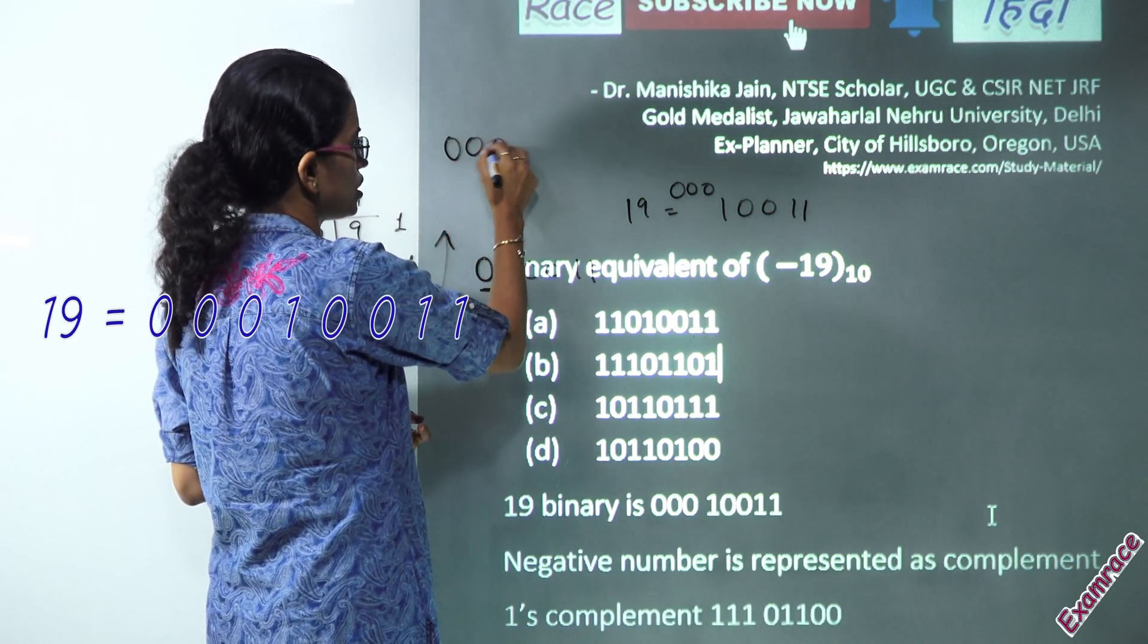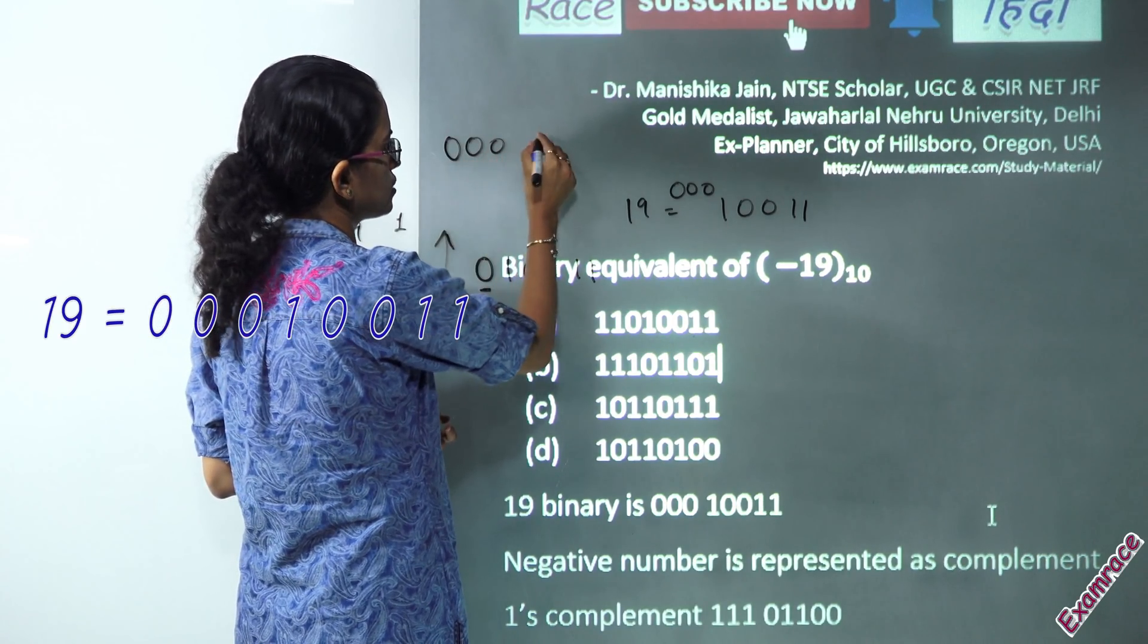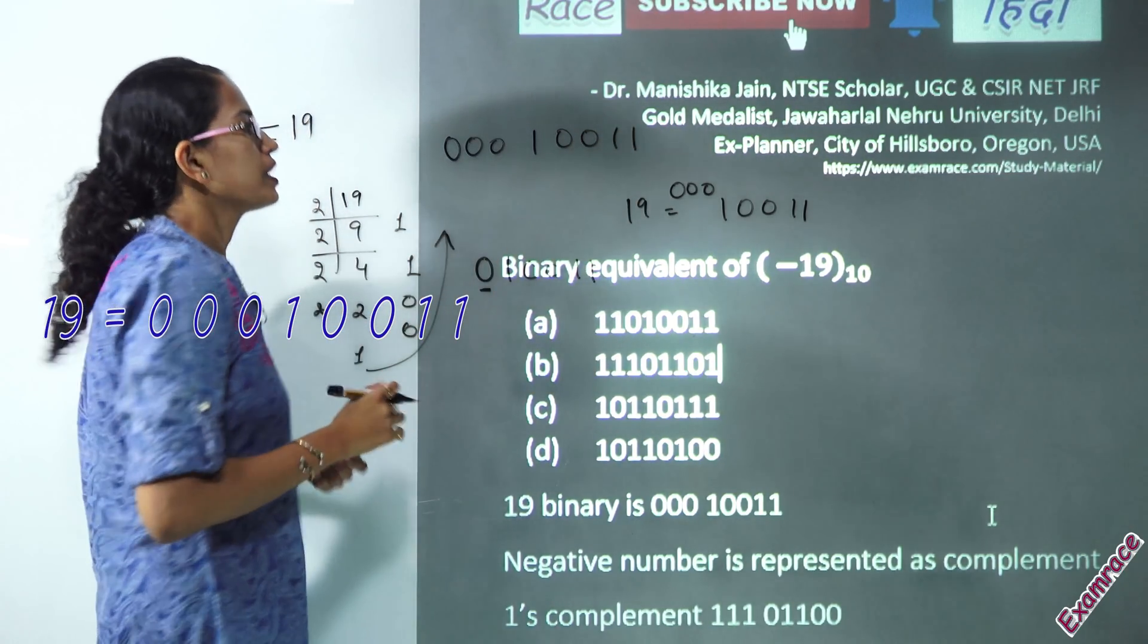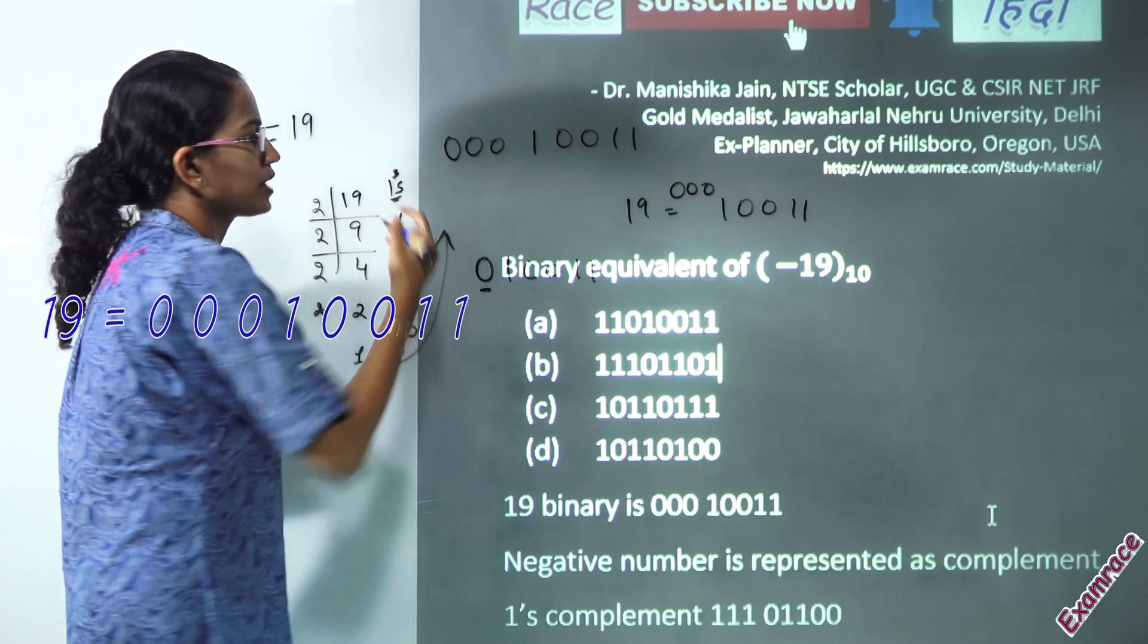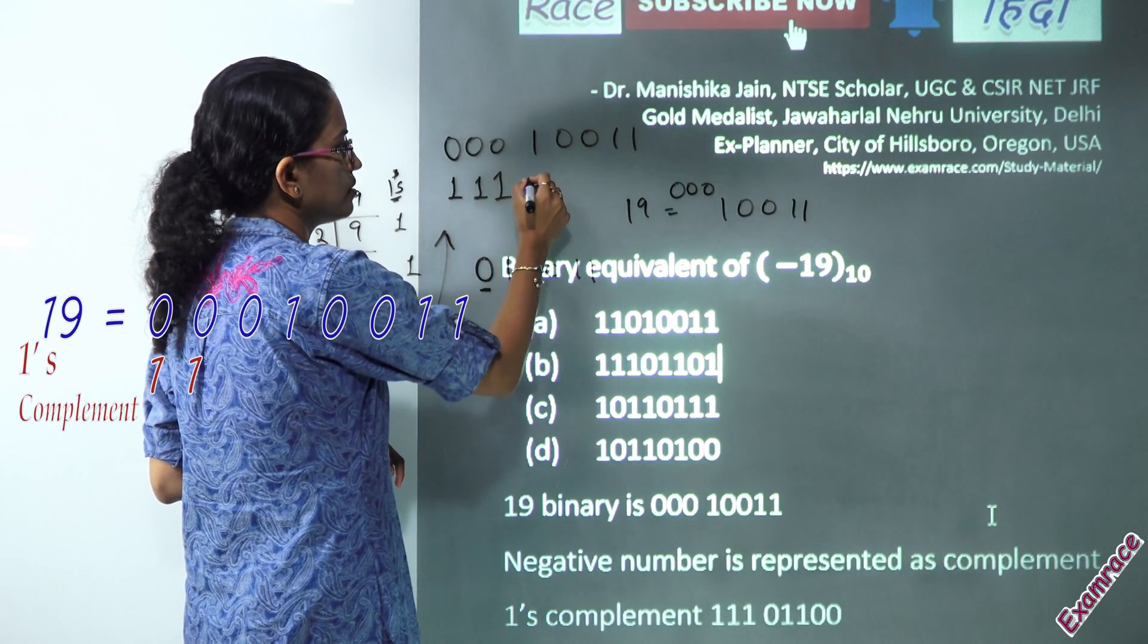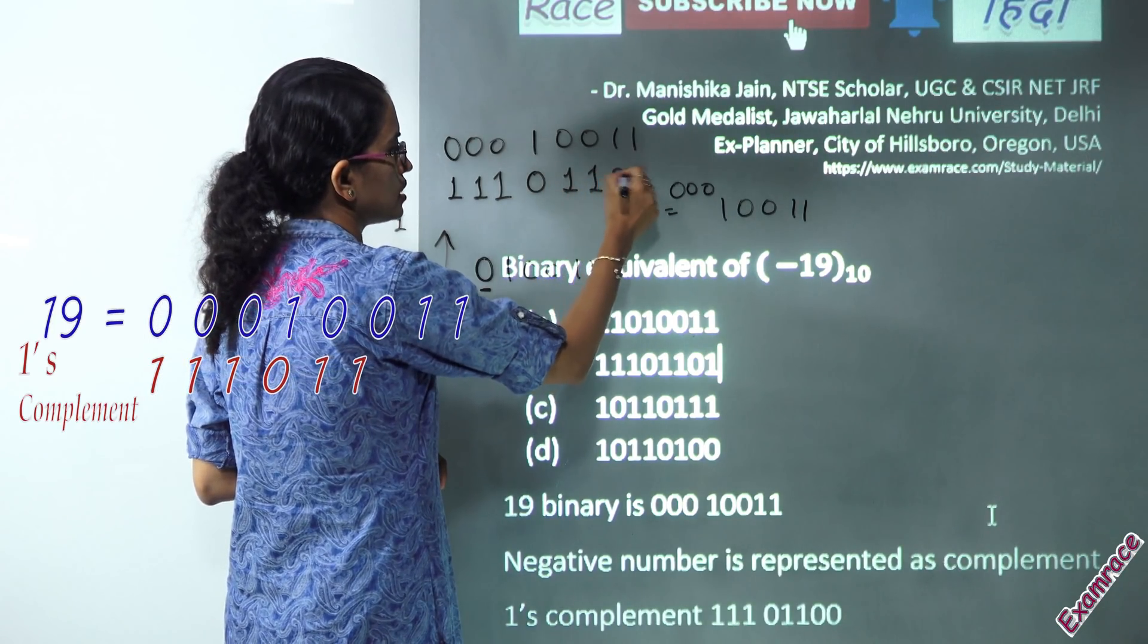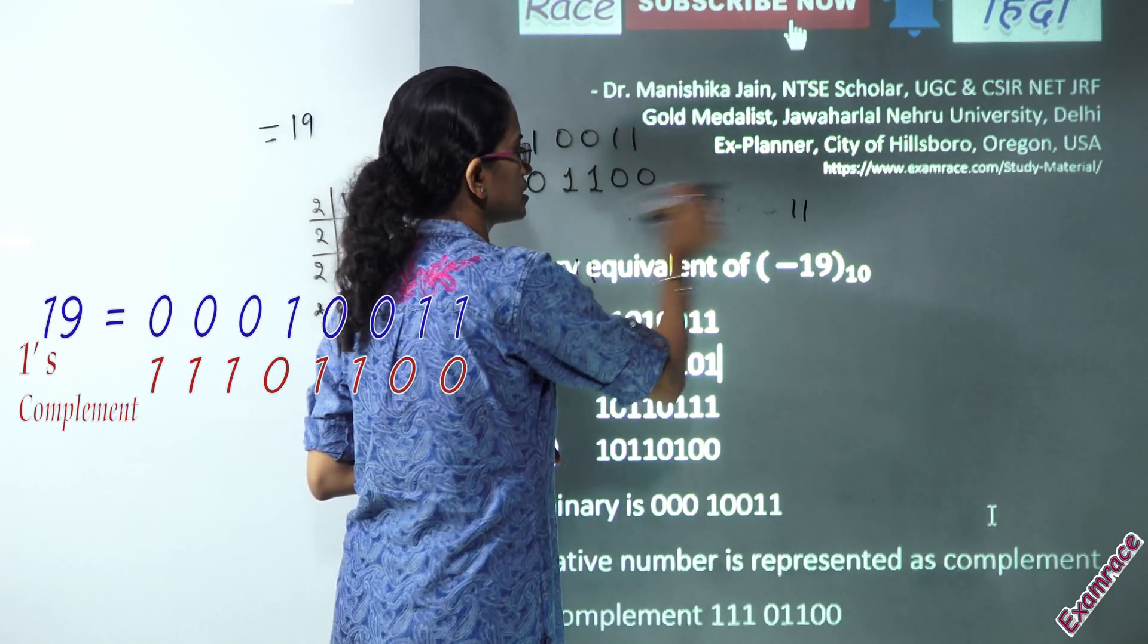So, I make it a kind of 8-digit number. So, you have 0, 0, 0. That's 3 separate. I'll keep it at a little distance from here. And, I have the number for 19 that I have found. Now, when I find out the 1s complement, what it would be? I'll just flip the digits. So, when I'm flipping the digits, 0 becomes 1. So, 1, 1, 1. 1 becomes 0. So, it's 0. Then, you have 1, 1, 0, 0. So, that's what is the 1s complement for this number.